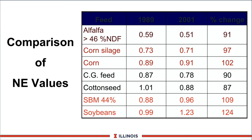Let's take a look at some of the individual feeds. You can see here we take a fairly low-quality alfalfa — the old NRC shows 0.59, the new NRC shows 0.51, so we dropped this by about 9 points. Corn silage stayed remarkably close. Corn went up a little bit. Corn gluten feed got hit a little bit harder. Cotton seed surprisingly got hit pretty hard. Soybean meal is up quite a bit, and soybeans increased a lot more. So you can see using the summative equations, feeds do change around a bit compared to the old NRC, and you'll have to learn these numbers when you use the new model.